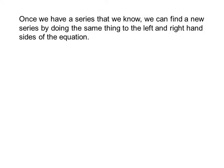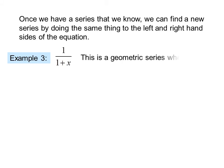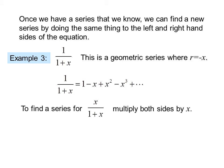Once we have a series that we know, we can find a new series by doing the same thing to the left and right-hand sides of the equation. For example, if I start with one over one plus x — this is a geometric series where r equals negative x — the series is one minus x plus x squared minus x cubed, etc. To find a series for x over one plus x, we multiply both sides by x and get x minus x squared plus x cubed minus x to the fourth, etc.